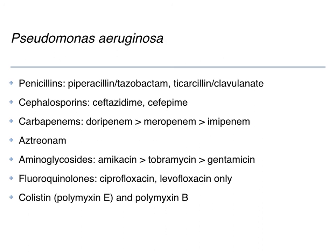Drugs that cover Pseudomonas: from the penicillins, piperacillin and ticarcillin by themselves do cover Pseudomonas but don't exist alone — only as combinations, so piperacillin-tazobactam and ticarcillin-clavulanic acid. Two cephalosporins: ceftazidime versus cefepime — if you had to choose one anti-pseudomonal cephalosporin, cefepime is preferred: remember 'don't pay a dime for ceftazidime.' From the carbapenems: doripenem, meropenem, imipenem — importantly, ertapenem is the only carbapenem that lacks coverage of Pseudomonas. Aztreonam covers gram-negatives only. Aminoglycosides: amikacin, tobramycin, gentamicin all cover Pseudomonas.